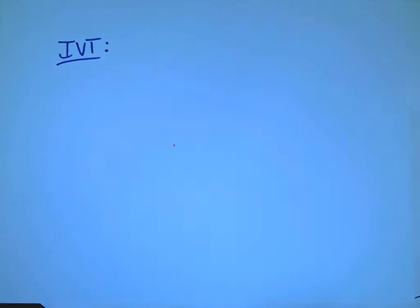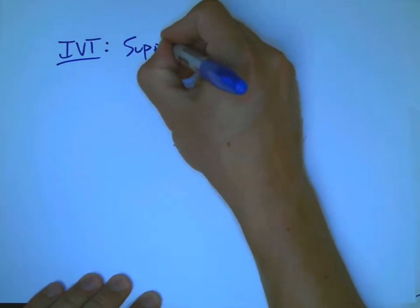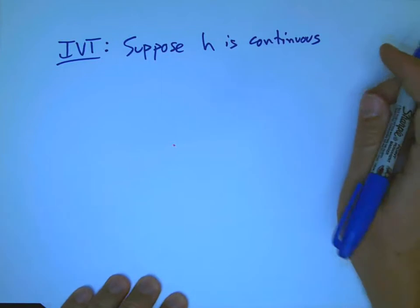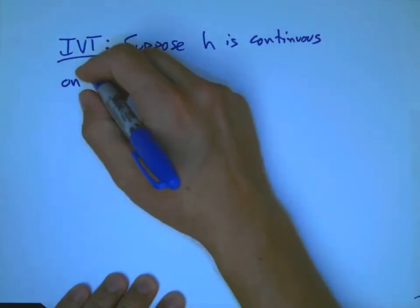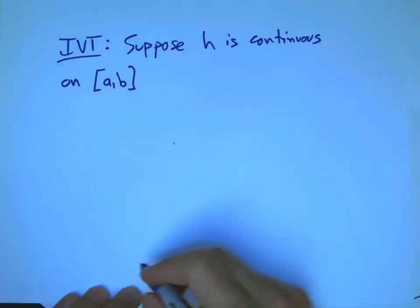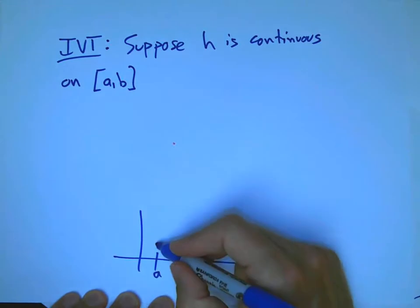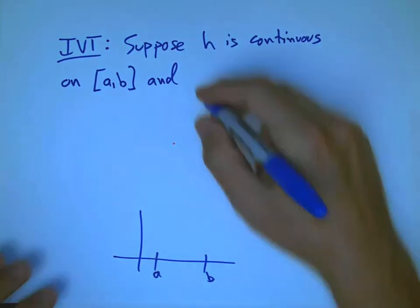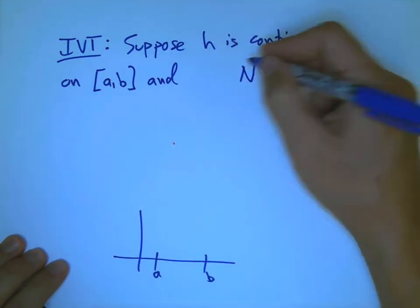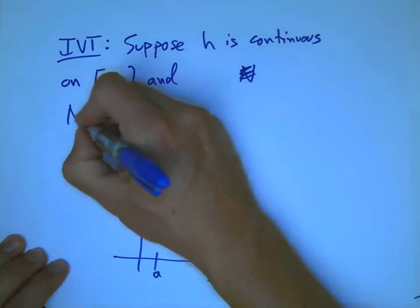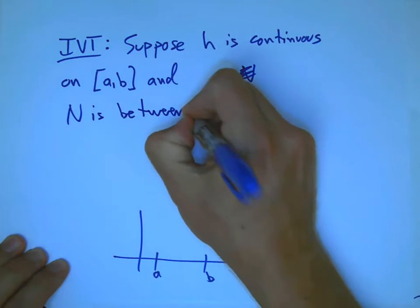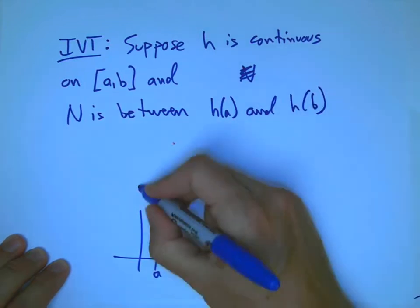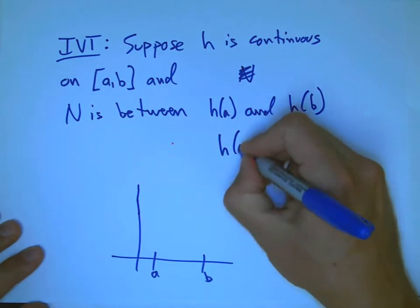So, IVT. I'm going to use another letter because I don't want to confuse with f and g here. Here's what it says. Suppose that h is continuous. If it's not continuous, it's totally not going to apply here. Suppose h is continuous on a finite closed interval a to b. I'll draw the picture here. And N is between h of a and h of b.